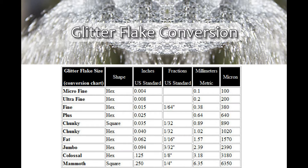The next column is US standard inches expressed as decimal points, which is pretty self-explanatory. Then we have US standard fractions — you'll notice some are missing because it gets impractical to express very small sizes below 1/64th, so we left those blank. Then the millimeters column and the microns column come after that.